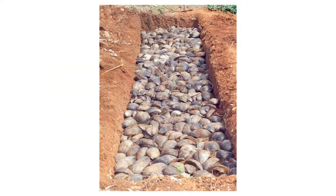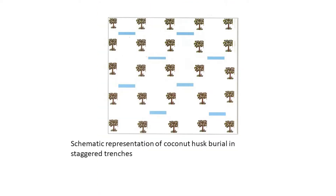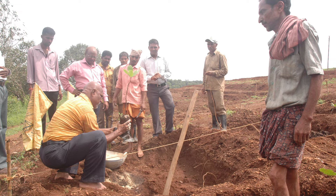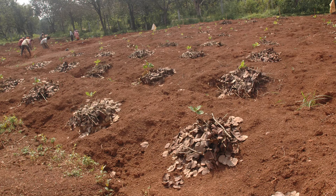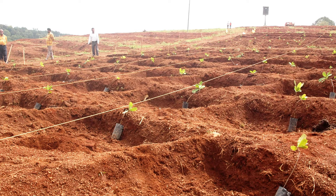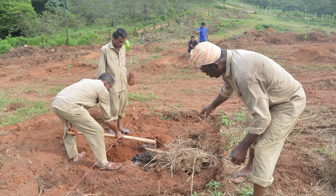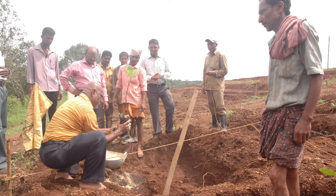Adoption of coconut husk burial techniques combined with soil and water conservation techniques like modified crescent bund and staggered trenches improves the water retention in soil for longer periods. Bigger pits and mulching can also be followed during the establishment of cashew plantations. Pits of 1m cube size are to be dug open at recommended spacing following other soil and water conservation measures such as terracing. These pits are to be filled with top soil, organic manure and rock phosphate at recommended rate up to two-thirds depth. The graft can be planted at the centre of this pit and proper mulching needs to be done.